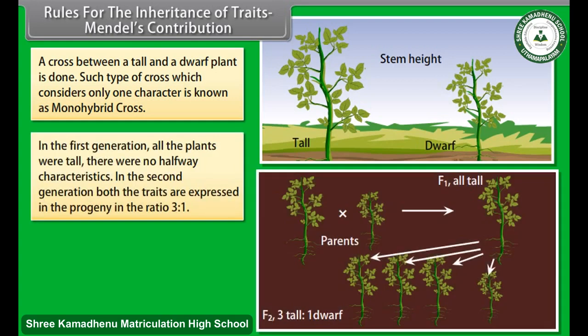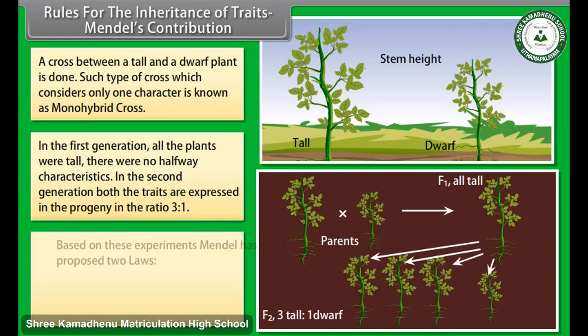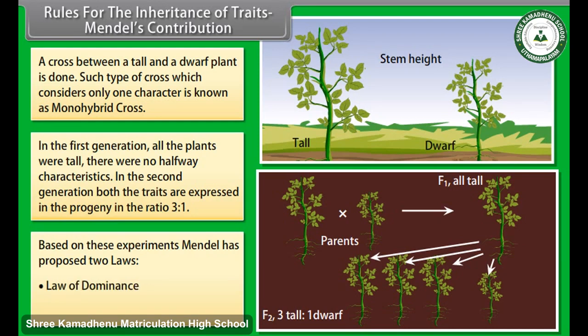In the first generation, all the plants were tall — there were no halfway characteristics. In the second generation, both traits are expressed in a progeny in the ratio 3:1. Based on these experiments, Mendel proposed two laws: the law of dominance and the law of segregation.